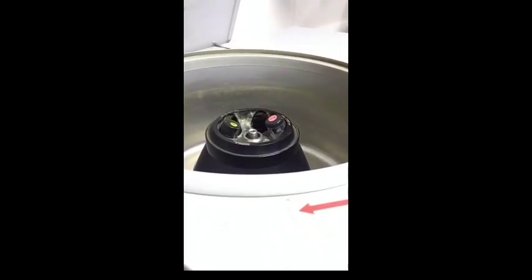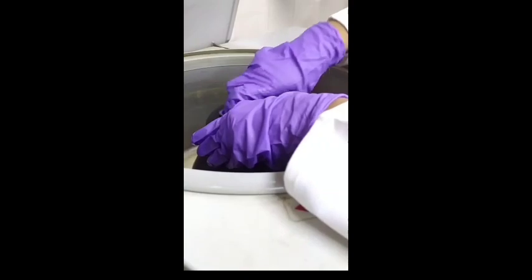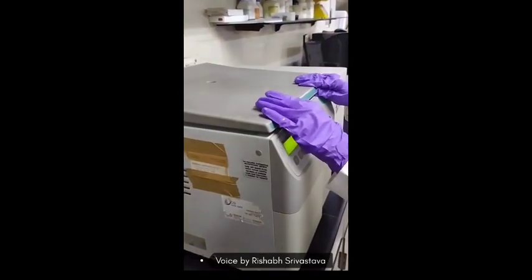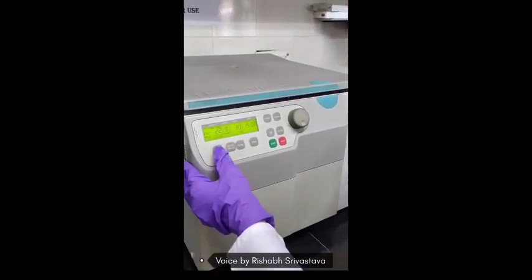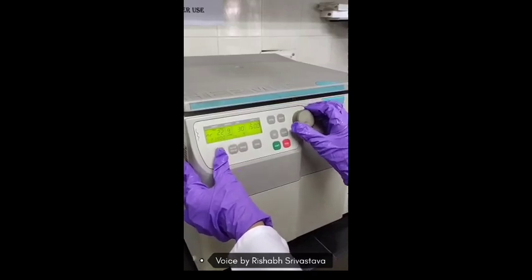Counter balance it by putting a blank opposite to the sample. Close the lid of the centrifuge machine. The machine has to be operated at 1500 rpm for 10 minutes and temperature should be around 4 degrees Celsius.